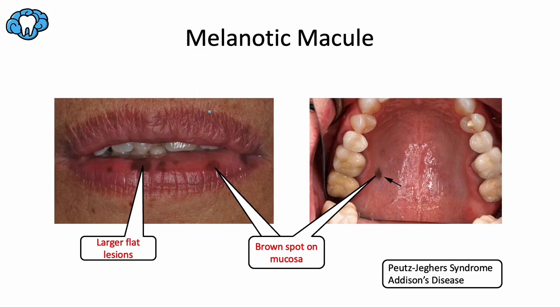Most melanotic macules are congenital — present from birth — and tend not to be related to sun exposure. A melanotic macule also tends to be larger than an ephelis, ranging from 3 millimeters to 3 centimeters in diameter. While both lesions are completely benign, a biopsy should be performed if there's any doubt about the diagnosis.